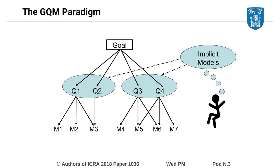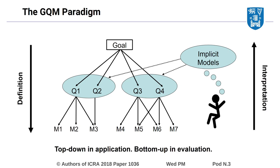These results can then be interpreted with respect to the underlying questions that were posed. The process of determining if a goal has been accomplished then involves examining the degree to which the questions were satisfied. In this way, metrics are defined systematically in a top-down fashion, while the interpretation of measurement data is done bottom-up.